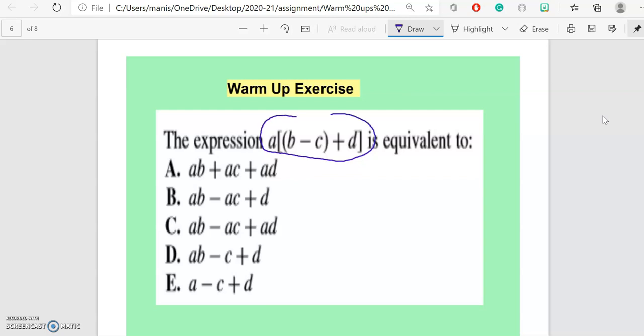I have to distribute my letter a with b and c. Now keep in mind, this bracket starts from here and ends over here, so this means I have to distribute my a to this variable also.